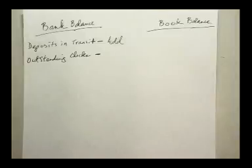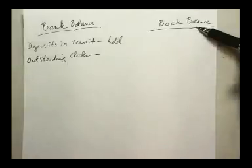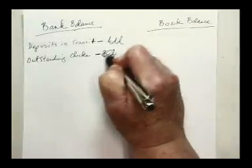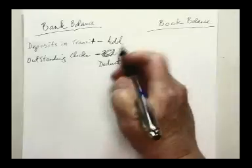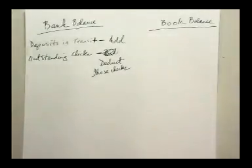They can't report anything on the bank statement that has not been presented for payment. So outstanding checks — because we have written them and recorded them on our books — we will deduct those checks from the bank statement balance. Just because the bank doesn't know about them, does it affect the fact that we have written them and they're out there? They could present them at any point in time, and we've got to make sure we've got money in the bank to cover them.